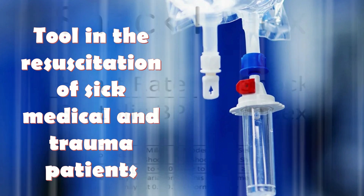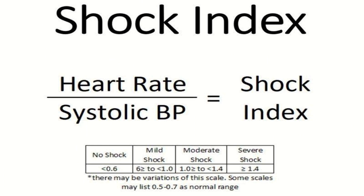Shock index is calculated from a simple equation relating heart rate and systolic blood pressure. When the shock index is less than 0.6, it means there is no shock. In mild shock, the shock index is equal to or more than 0.6 and less than 1.4. In the case of severe shock, the shock index is equal to or more than 1.4.